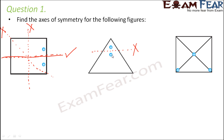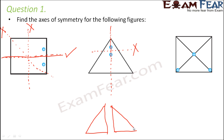In this diagram, no matter where you draw a line to divide the two holes into separate halves, the halves won't be identical. Instead, draw a line that passes through the middle of the two holes, dividing the figure so that each half contains half of each hole. In this way the two halves are mirror images of each other, so this is the line of symmetry.